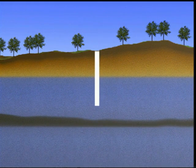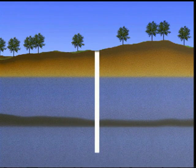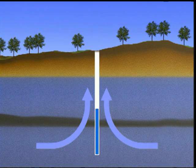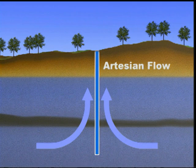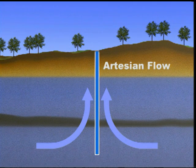When the water pressure in a confined aquifer causes the water in a well to rise higher than the top of its confining unit, it is termed an artesian aquifer. Commonly, these artesian wells may flow at the land surface.